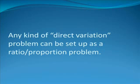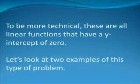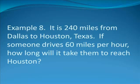Any kind of direct variation problem can be set up as a ratio-proportion problem. Direct variation problems involve a formula like distance equals rate times time, total cost equals unit price times quantity ordered, power is equal to current times voltage, voltage is equal to current times resistance, etc. To be more technical, these are all linear functions that have a y-intercept of zero. Let's look at two examples of this type of problem.